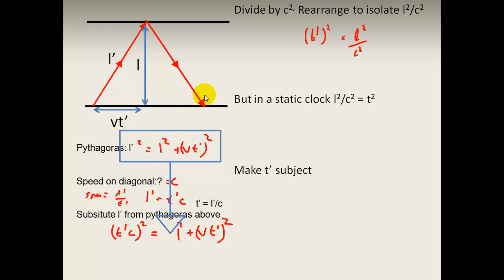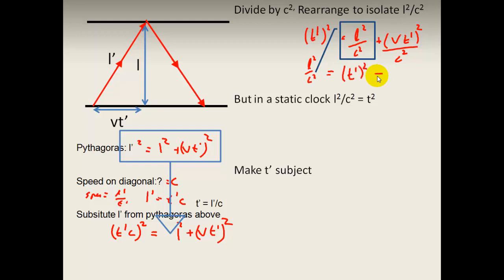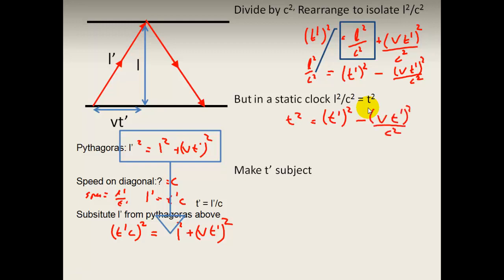Now we divide both sides by C squared. So T prime squared equals L squared over C squared plus VT prime squared divided by C squared. We rearrange to make L squared over C squared the subject on the left-hand side, moving VT prime squared over C squared to the other side. And L squared over C squared equals T squared — our measurement of time squared.